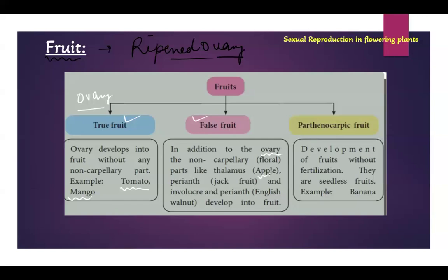In case of apple, the thalamus part is also involved in forming the fruit. In case of jackfruit, it is the perianth which is forming the fruit. In case of English walnut, some part of the perianth and involucre is also forming the fruit. Since it is not only the ovary converting into the fruit, it is called a false fruit.